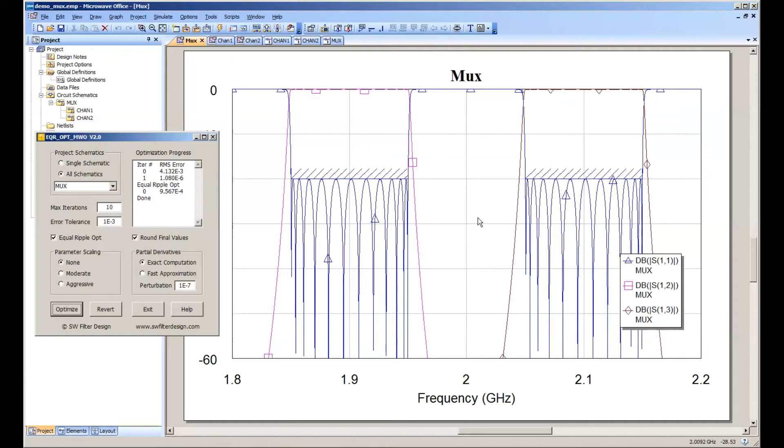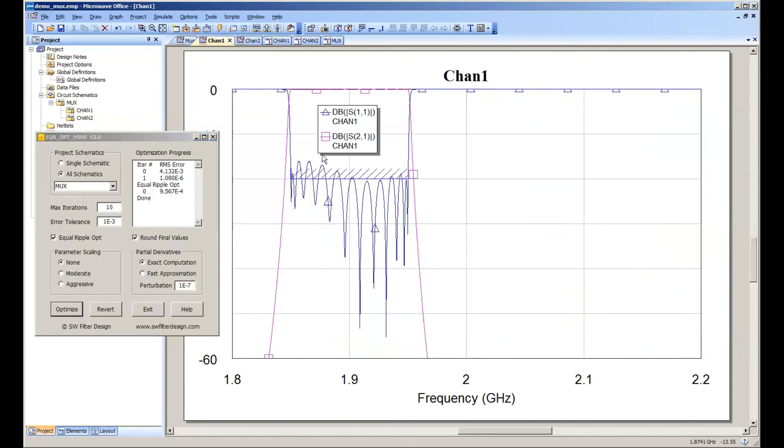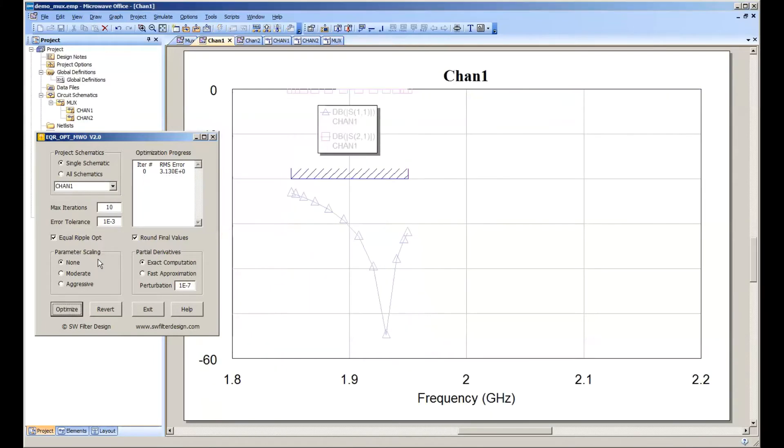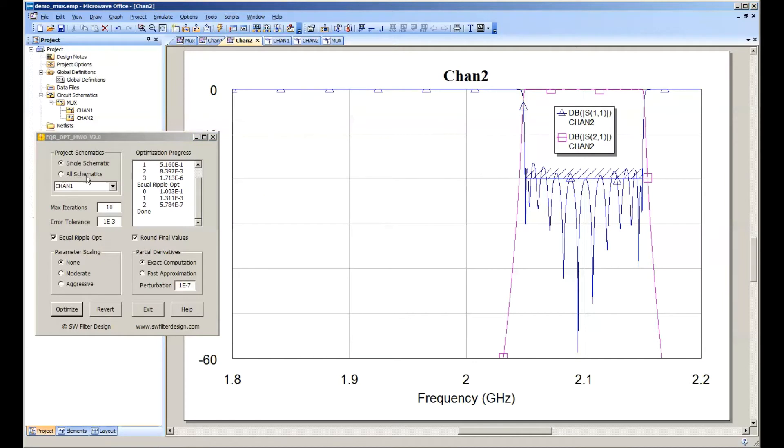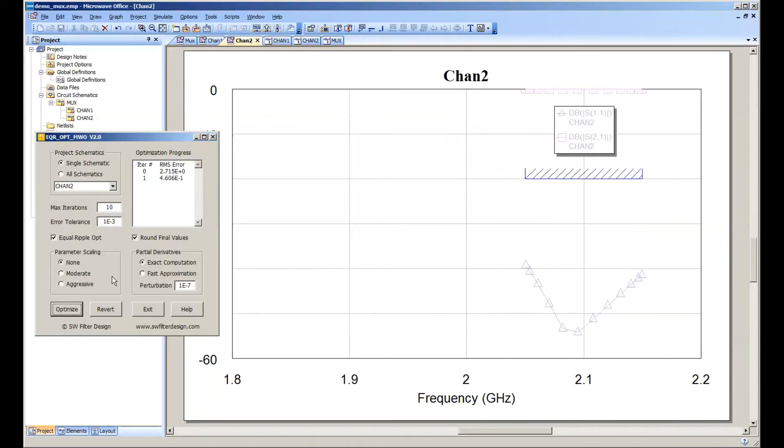One advantage of this multi schematic approach is if something goes wrong or if we were experimenting with different manifold networks, we can easily bring this back to a known starting point. We can go look at our channel one filter and with the optimizer tell it, okay, bring that one back to doubly terminated. So we can do that very quickly. And we can do the same thing with channel 2. And go over here and select channel 2. And we'll bring that one back to doubly terminated.